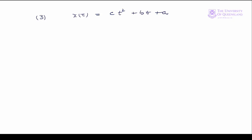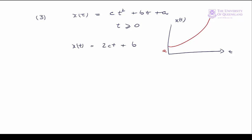The third case is where we have an object that's accelerating. So x of t might equal something like ct squared plus bt plus a. We'll only consider the case where t is greater than or equal to zero. We'll have the right-hand side of a quadratic function with intercept a. The first derivative x prime of t equals 2ct plus b, so the slope is a function of time — it changes depending on t. The second derivative equals 2c, a constant. It tells us that the first derivative changes at a constant rate, 2c.